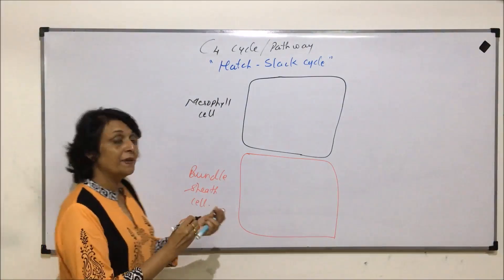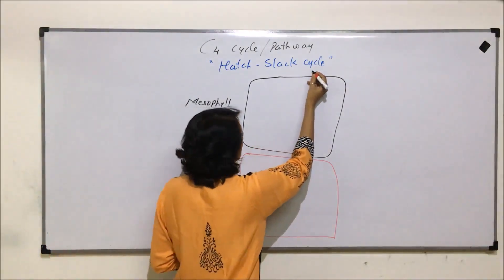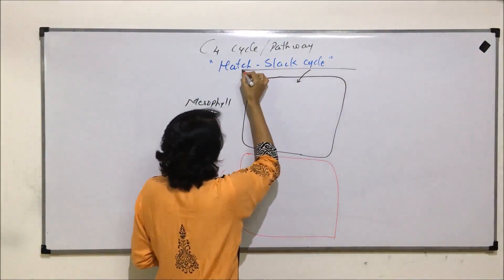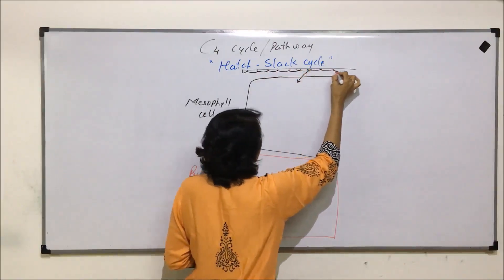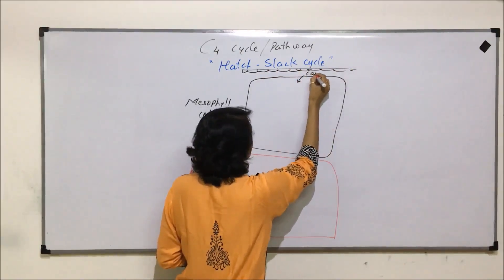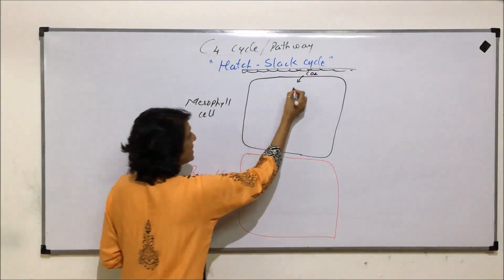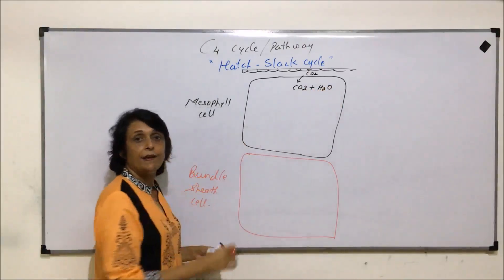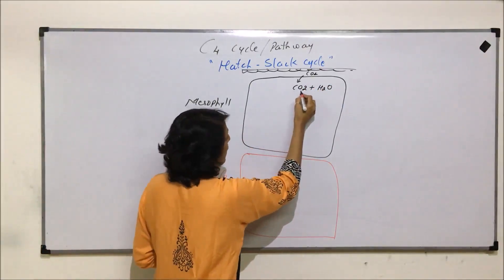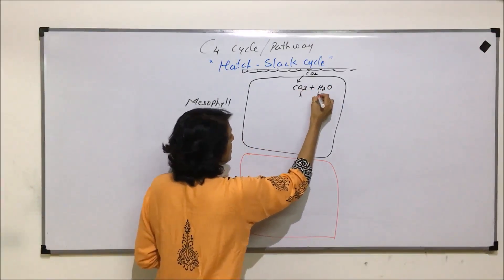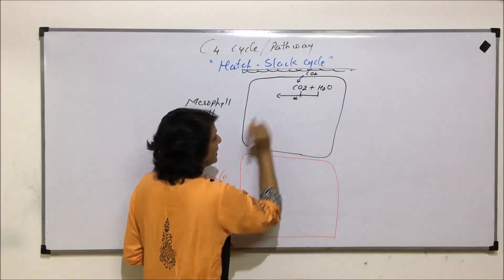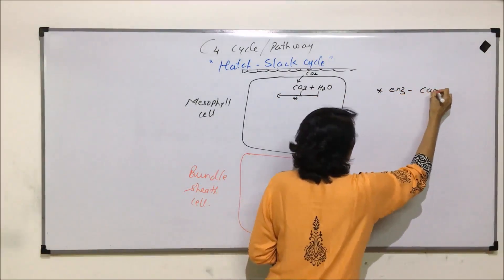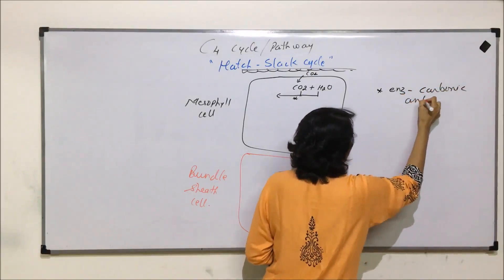What happens is carbon dioxide diffuses into the mesophyll cells. There is epidermis and carbon dioxide is diffusing in. This carbon dioxide reacts with water molecules already present in the cell in the presence of the enzyme carbonic anhydrase — marked here with an asterisk.